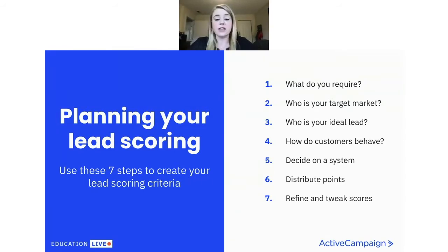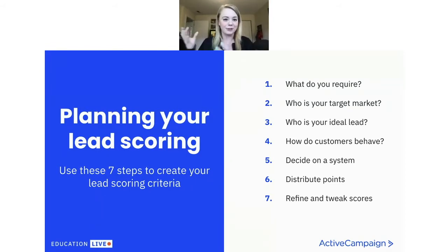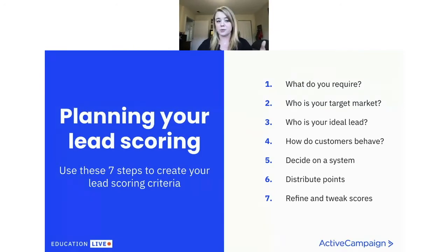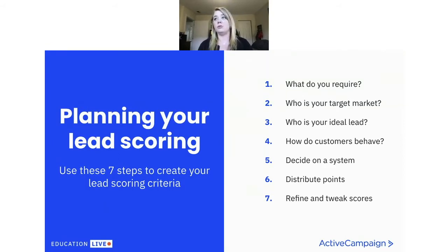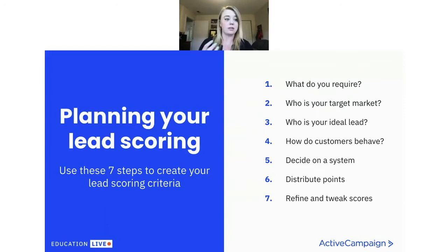Next, think about who your ideal lead is — identify the characteristics of a perfect customer for you. If someone is taking the actions that your perfect customer would take, give them more points. For example, maybe people with a certain size budget are your perfect customer, or someone who is the decision-maker in their business. If someone is the decision-maker, they might get a few more points just based on their role alone.